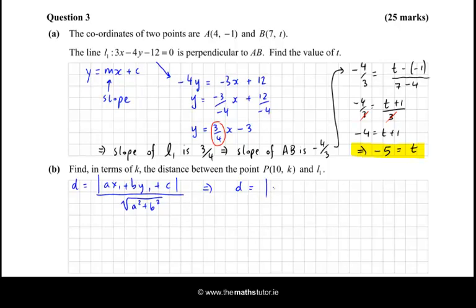And we have a, which is 3, times x1, which is 10, plus b is -4, times y1, which is k, plus c is -12. And then we divide that by the square root of 3² plus -4², plus -4². So let's simplify that, and we get 30 - 12 - 4k.